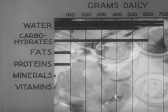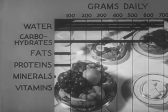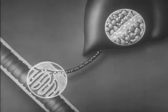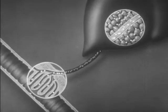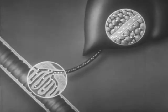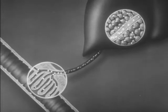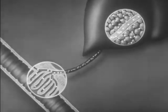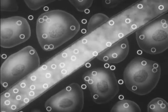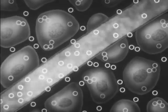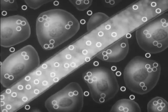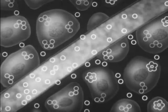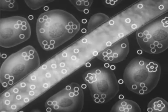During digestion, the simple sugars are absorbed by the walls of the intestines. Here they pass into the bloodstream and the portal vein carries them to the liver. Aided by insulin and enzymes, the liver converts soluble sugars into insoluble glycogen and stores it until needed by the body.